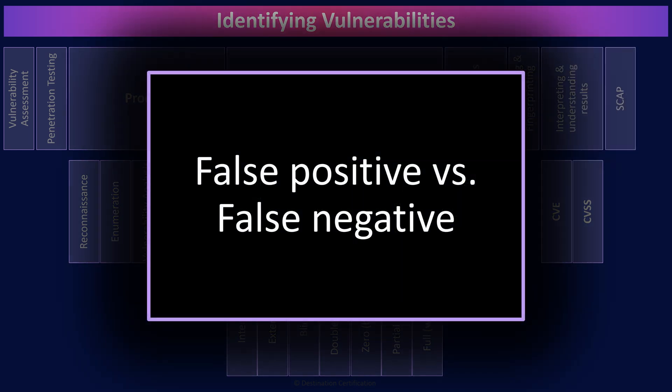Finally, false positives and false negatives are important challenges we need to deal with. A false positive is where we identify a potential vulnerability and upon further investigation realize there is no vulnerability — we've spent time chasing something that wasn't actually there. False negatives are far, far worse. This is where a vulnerability exists and our tools don't identify it — we are blind to the vulnerability. This is dangerous, so we really don't want false negatives.